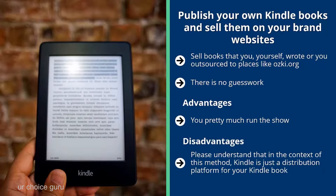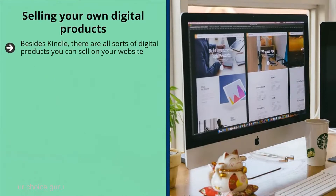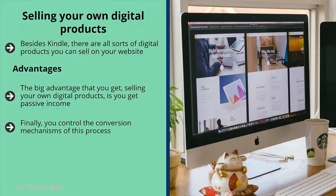Disadvantages: in the context of this method, Kindle is just a distribution platform — the heavy lifting for selling is all up to you. Selling your own digital products: besides Kindle, there are all sorts of digital products you can sell on your website — templates, graphics, software, anything downloadable. Advantages: you get passive income. You create a product once and sell it many times over. You also control the platform and can talk about your products through podcasts, videos, and pictures. Finally, you control the conversion mechanisms — my biggest complaint about affiliate programs is that sometimes the conversion page doesn't do a good job even when I've driven hard traffic.